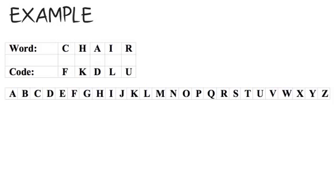Example: the code for CHAIR is FKDLU — what is the code for TABLE? For this question, write the word and the code underneath it. Word: C H A I R. Code: F K D L U. By using the alphabet, you can see that the first letter of the word is C, and by counting on three letters it becomes F. The second letter is H, and counting on three letters it is K.